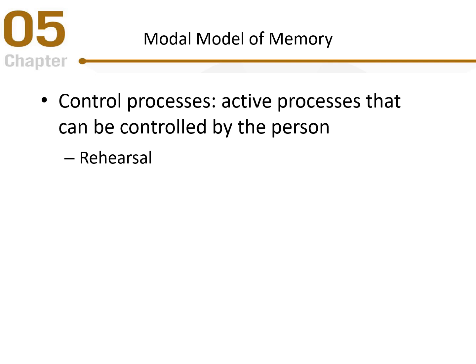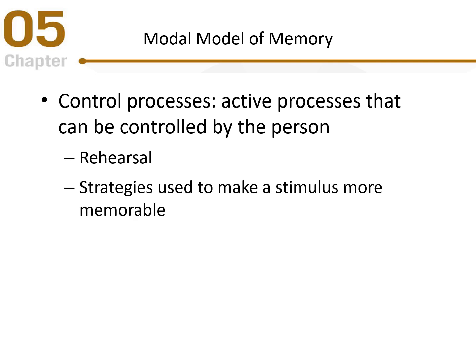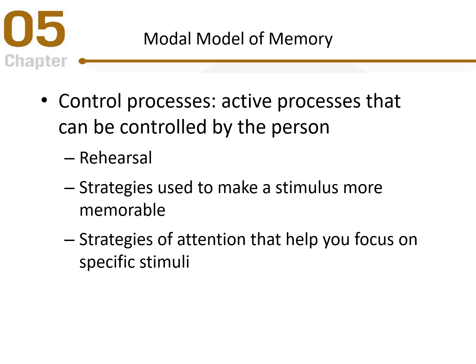Control processes include rehearsal — repeating a phone number over and over again makes it more likely you'll retain that information. They also include using strategies to make a stimulus more memorable, such as associating a new item with something already in memory to give it something to hang on to. Additionally, strategies of attention help you focus on specific stimuli in the environment so they're more likely to be remembered later.